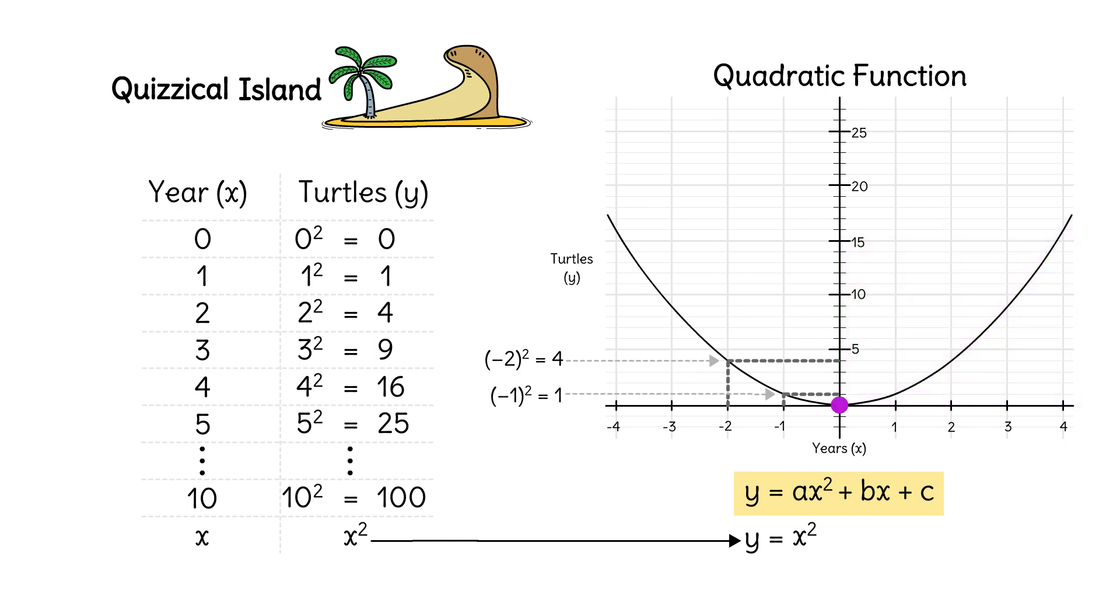This point is called the vertex. Depending on the quadratic, the vertex can be in different locations. Quadratic functions can be represented with tables, equations, and graphs.